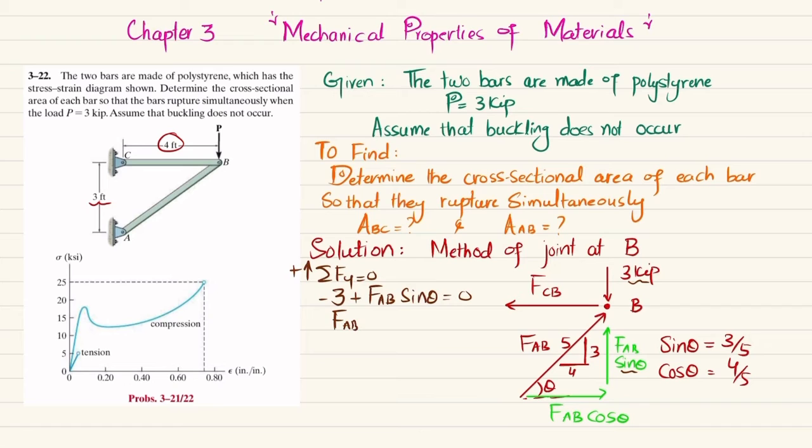So it means that FAB sine theta equals 3 over 5 equals 3. And we will get FAB equal to 5 kips.